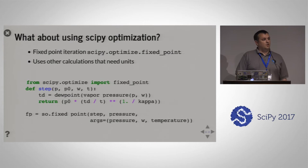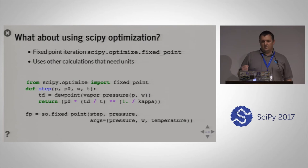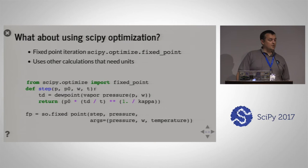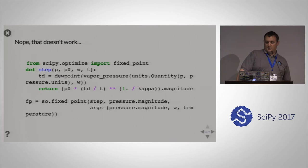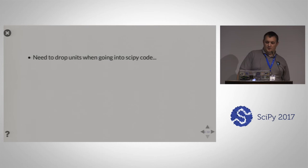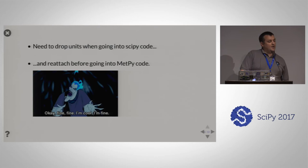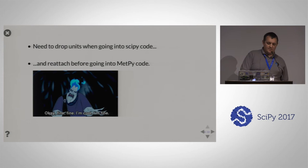What about SciPy optimization? We try to use fixed-point optimization from SciPy Optimize. Ideally, I'd write a clean callback that just calls dew point and vapor pressure calculations with units, does some math, and iterates. That's not what I get to write. Instead I have to write code that drops units when calling fixed point, reattaches units inside the callback before going into MetPy code, then drops them again on the way out. We're constantly bouncing back and forth — and that does not make me happy.